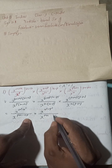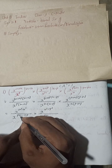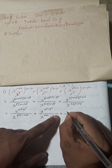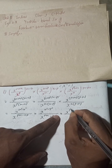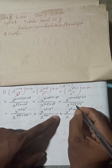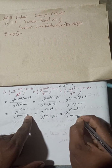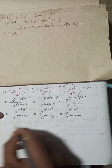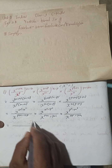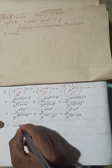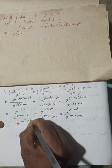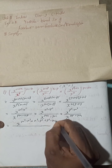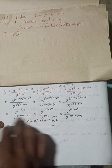Since all the bases are x and they are in multiply form, we can add all the powers. The denominator powers also combine. Adding all exponents: (m²−n²) + (n²−p²) + (p²−m²) for the numerator terms, and then the remaining denominator exponent terms: −mp + np − mn + pm − np + mn.